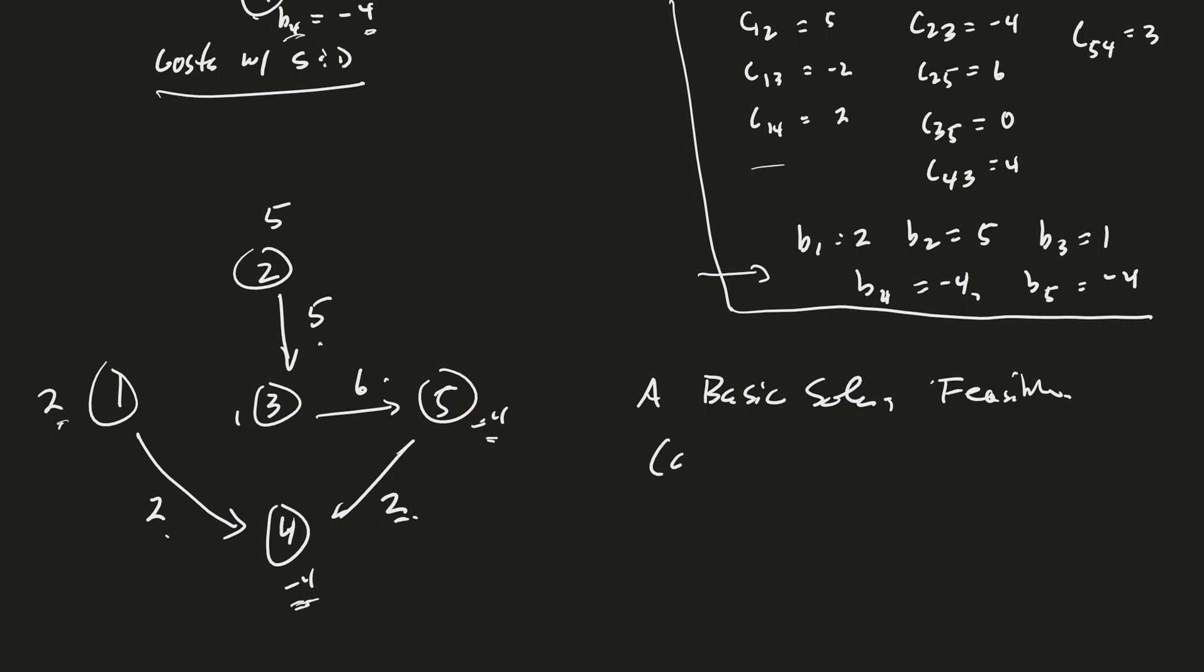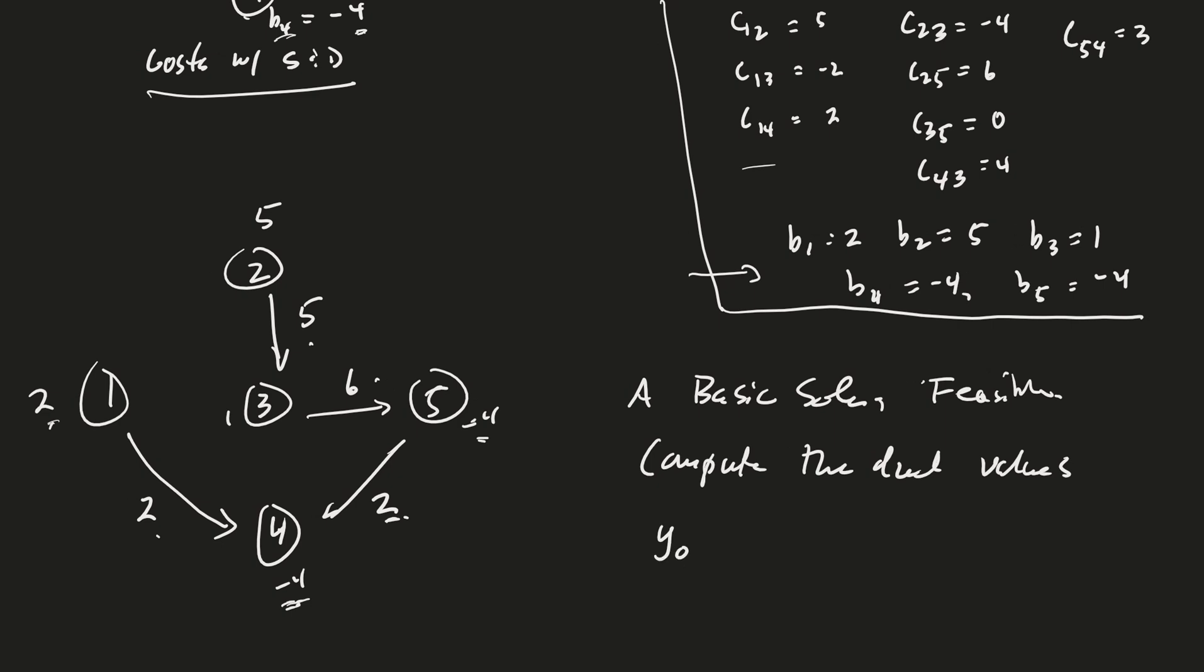Very good. Now, we compute the dual values for each node. And we start that off by taking y1 equals 0. Good. And then we look at node 1. And actually, we're looking at the arc from 1 to 4, right? And so we're taking our c14 is equal to y1 minus y4. And from this, I'll be able to figure out what the y4 is. So my c14 was 2. My y1 was equal to 0. And then my y4 is there. That's my unknown. So y4 is negative 2.